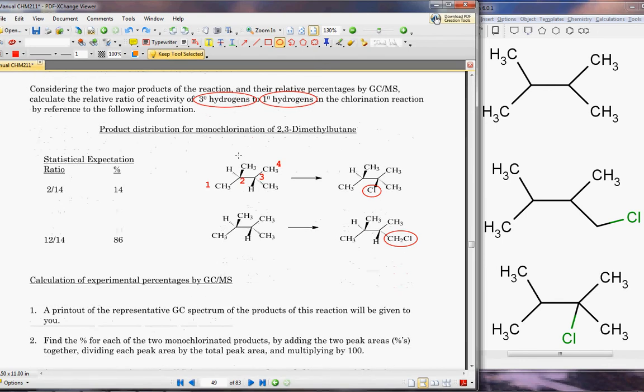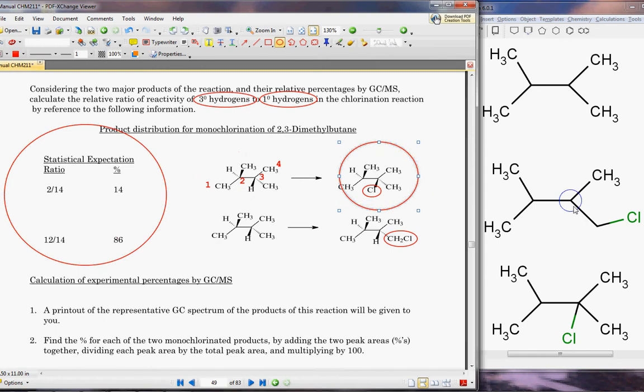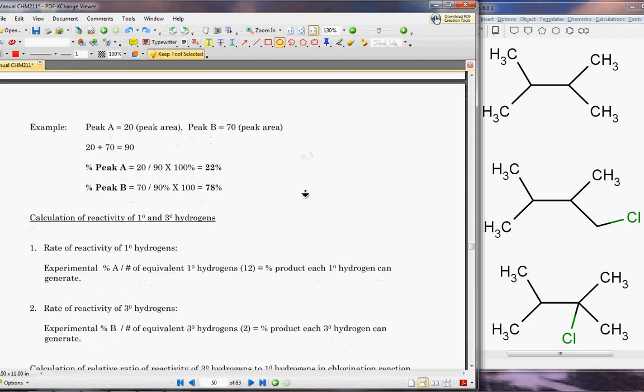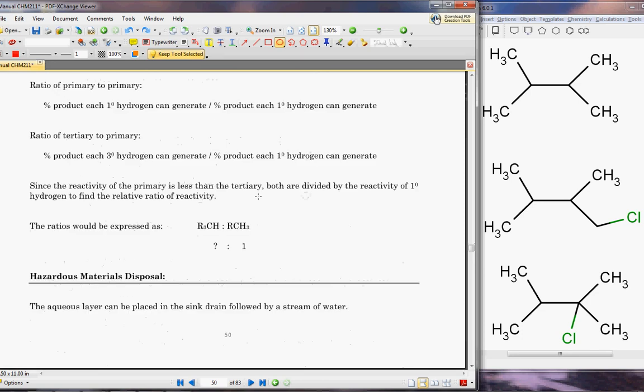This is kind of what we're expecting to get: 14% of this guy, which I've drawn right here. The 14% is going to be for the tertiary carbon or tertiary hydrogen because it's going to be more difficult to bond to that hydrogen. And you're going to expect a much larger percent, 86%, to be of this compound right here because the chlorine can easily attack this primary hydrogen. You will calculate it with GCMS and see what you get.